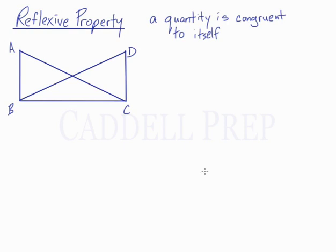Let's go over the reflexive property. The reflexive property is simply that a quantity is congruent to itself. How does that help us?